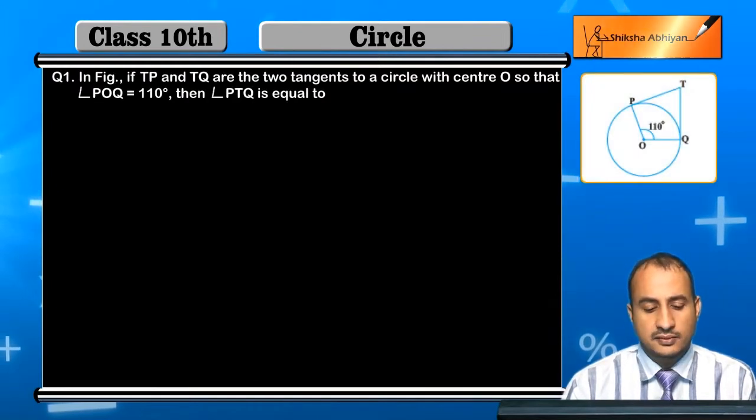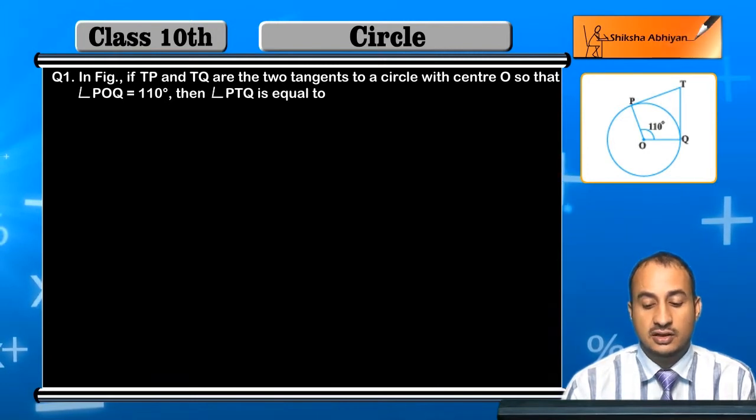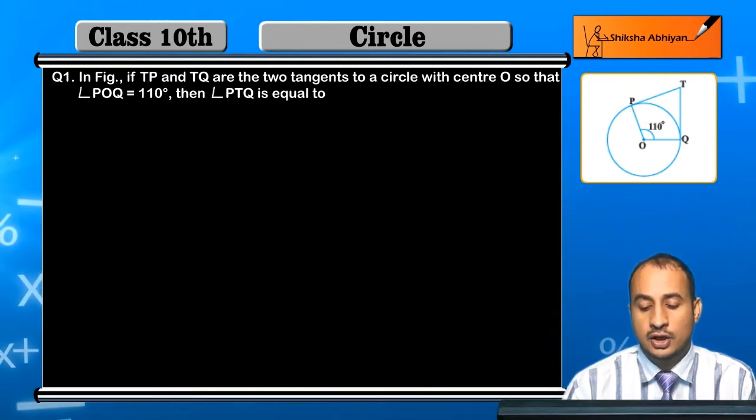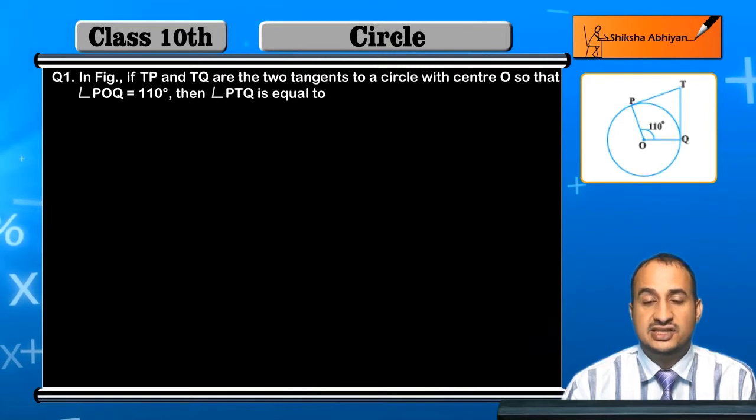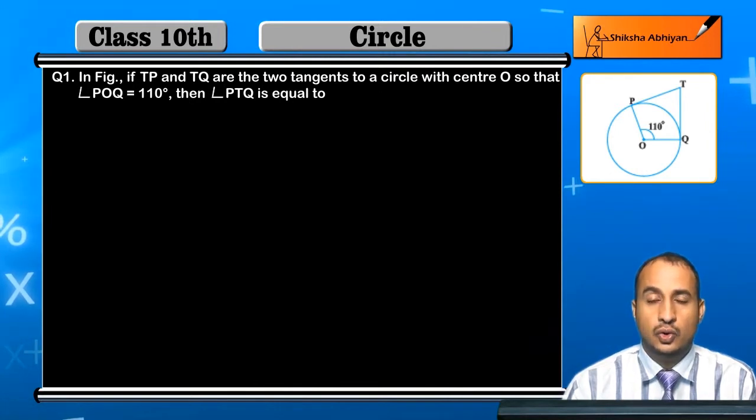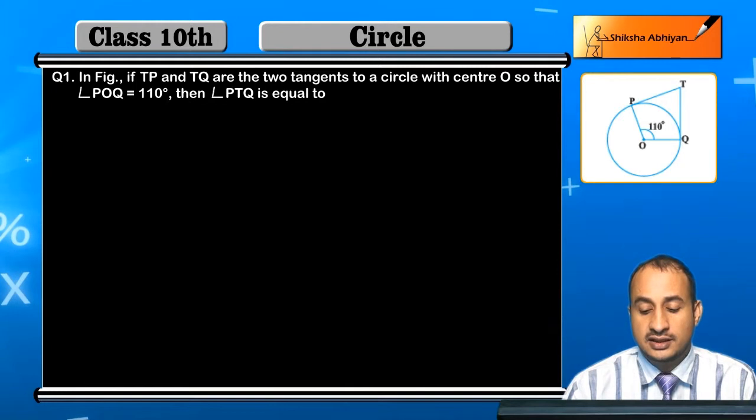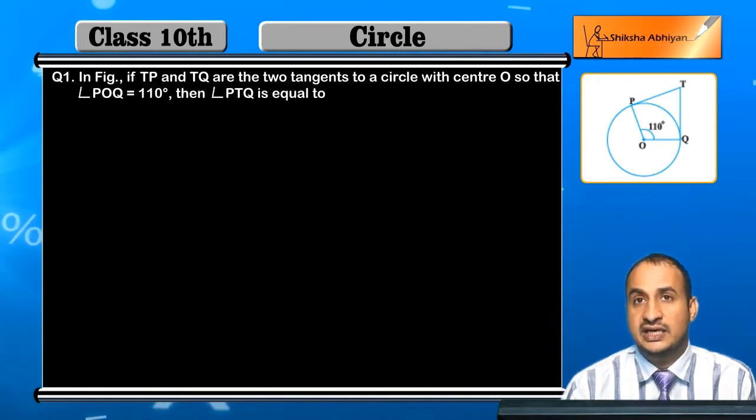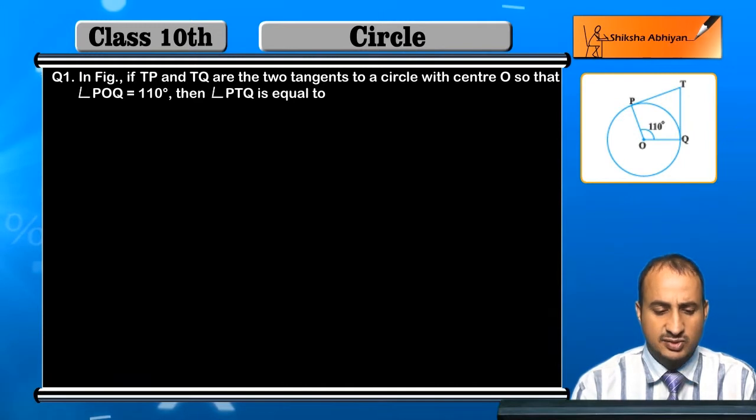In figure, if TP and TQ are the two tangents to a circle with center O so that angle POQ is 110 degrees, then angle PTQ is equal to? You will find out the value of the angle PTQ, which is the question we will solve.